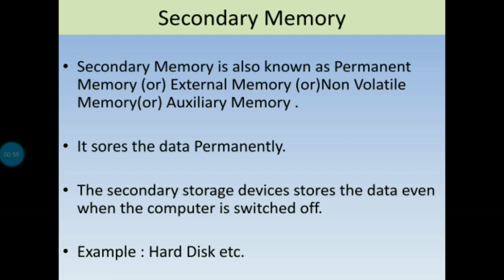Secondary memory is also known as permanent memory, or external memory, or non-volatile memory, or auxiliary memory. In contrast, primary memory is also known as temporary memory or volatile memory.